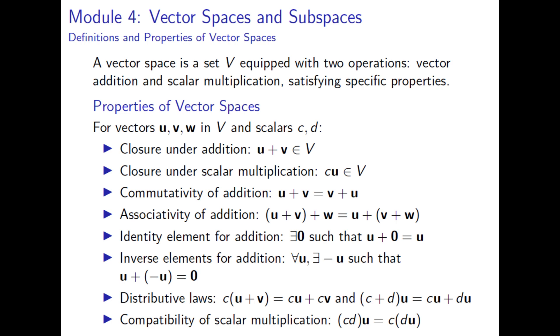A vector space, denoted as V, is a set equipped with two fundamental operations: vector addition and scalar multiplication. These operations follow specific rules, including closure under addition and scalar multiplication, associativity, and the existence of an identity and inverse elements.